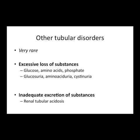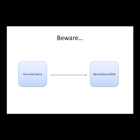There are also other tubular disorders that you'll read about — generally due to excessive loss of things in the kidneys or inadequate excretion. Examples: if you have a problem reabsorbing glucose, you get glucosuria; problems absorbing amino acids lead to aminoaciduria; and there's a whole group of renal tubular disorders — types 1, 2, and 4 — to do with inadequate excretion. But this is just for completeness.